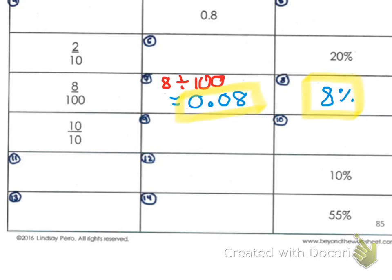8 percent, if you change it to a decimal, we know that the decimal place would be here, and we would move one, two places to the left, and that would give us 0.08, meaning that our decimal equivalent is correct as well.